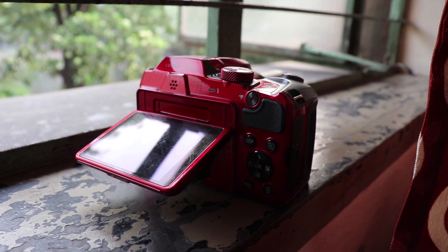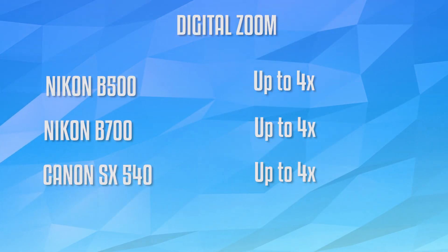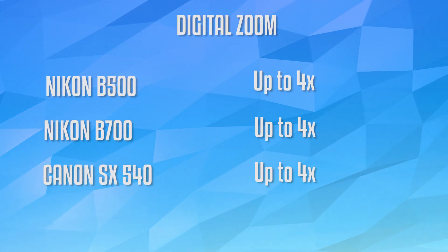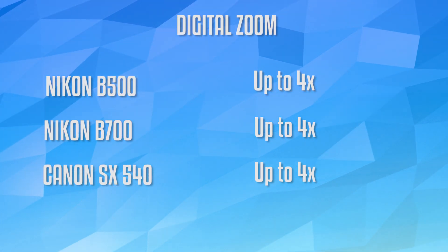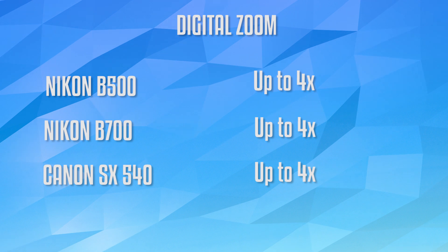Starting with the digital zoom, the Nikon B500 can go up to 4x digital zoom. The Nikon B700 can also go up to 4x, and the same will be for the Canon SX 540.